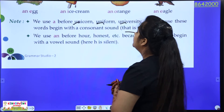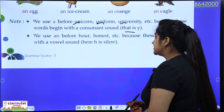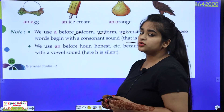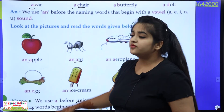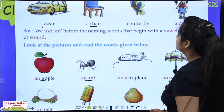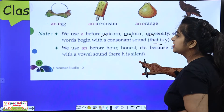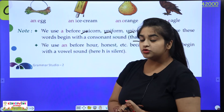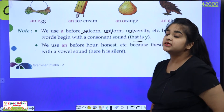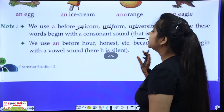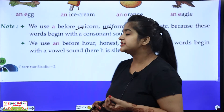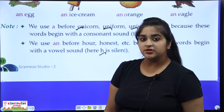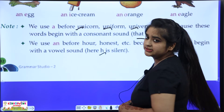Next, we use AN before words like 'honest' because these words begin with a vowel sound. H is silent in 'honest' — we say 'onest,' right? So we use AN honest. Okay?